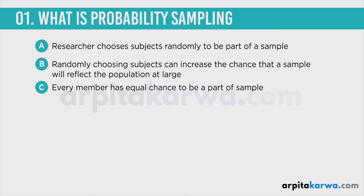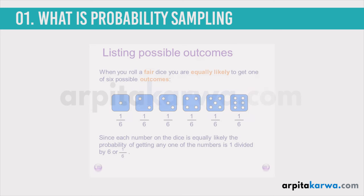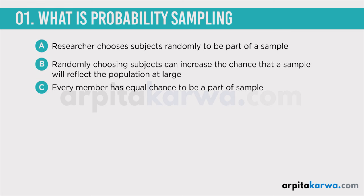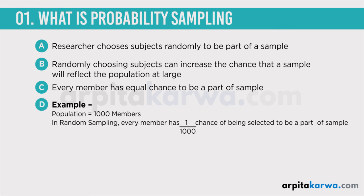If I choose a particular member, it is going to represent the population. It's just like throwing dice — when I throw dice there is an equal chance of getting any one of the six numbers. Similarly, in probability sampling every subject has an equal chance or equal opportunity to be a part of the sample. For example, if there is a population of a thousand members, every member will have a one-in-a-thousand chance of being selected. If this scenario is happening, then we say that it is probability sampling.